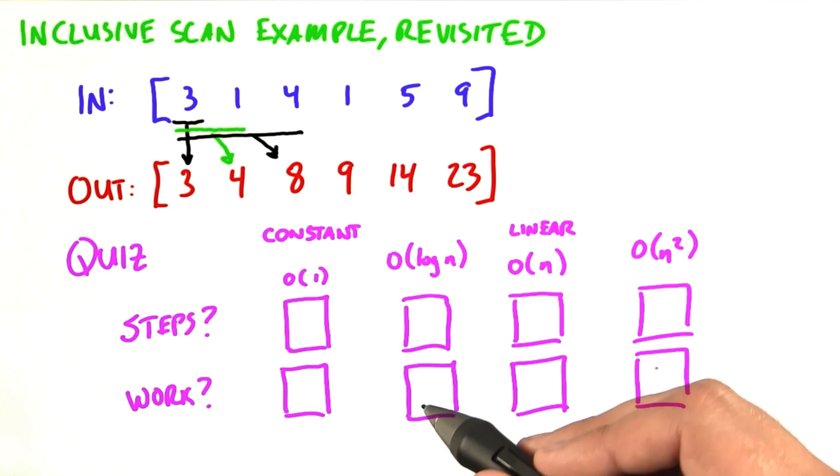So what I'd like you to do is check the right box in the steps row and check the right box in the work row that corresponds to the relationship between the size of the input and the number of steps or the amount of work.